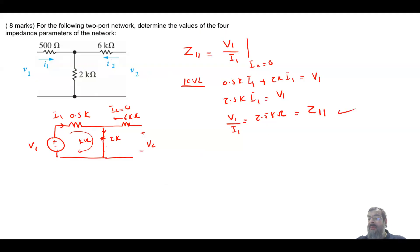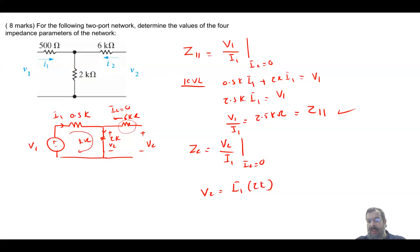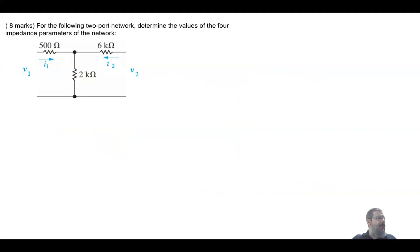Now find z21. z21 = v2/i1 when i2 = 0. Since the voltage drop across the 6 kΩ is zero (no current flows through it), v2 equals the voltage across the 2 kΩ. Therefore v2 = i1 × 2k, and v2/i1 = 2 kΩ = z21.